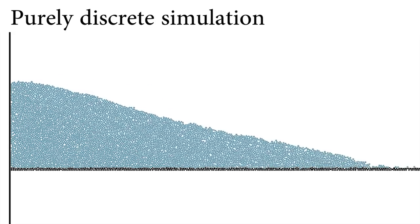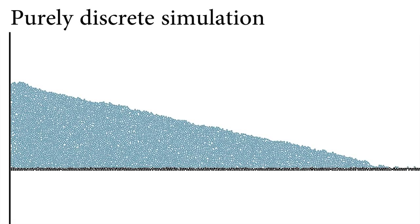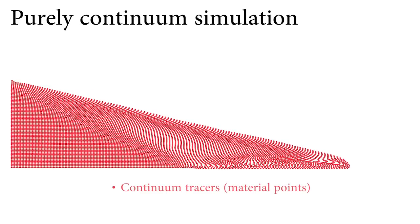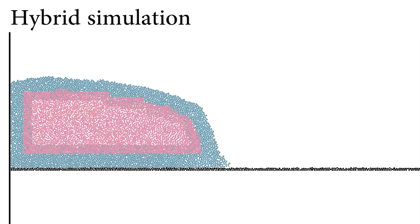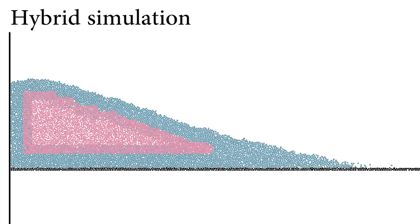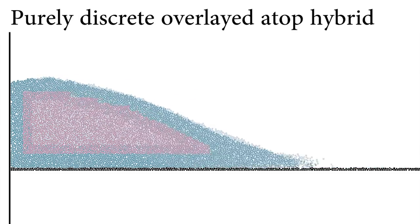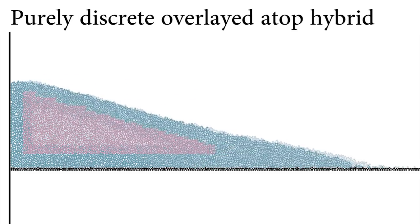We simulate a collapsing column of grains with the discrete element method. Here it is again with the continuum material point, tuning the continuum to match the discrete simulation. Our hybrid method captures flyaway grains unlike the continuum result, and the hybrid result shows good agreement with the overlaid discrete simulation.